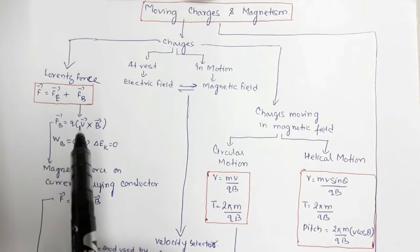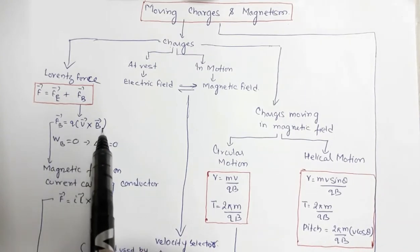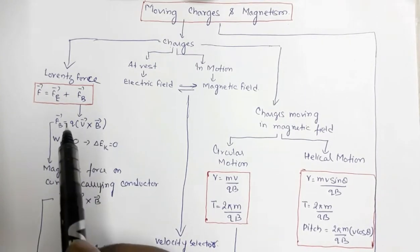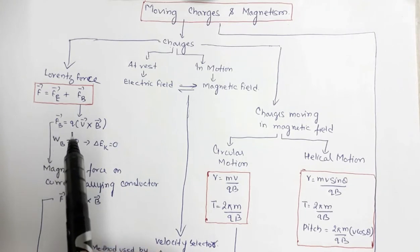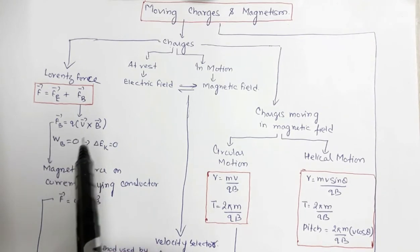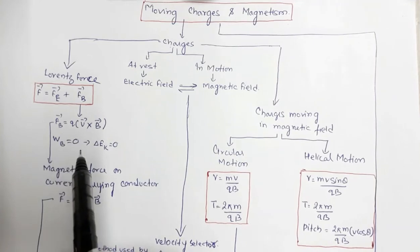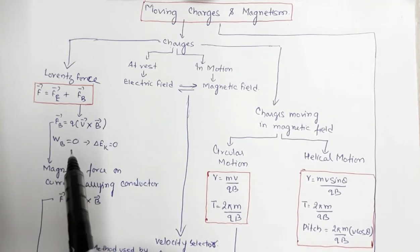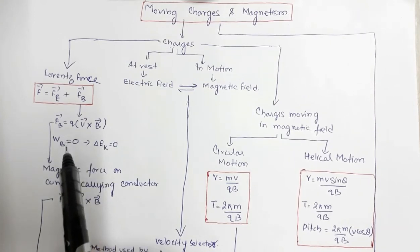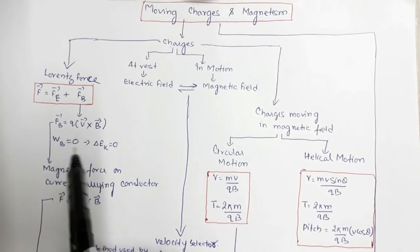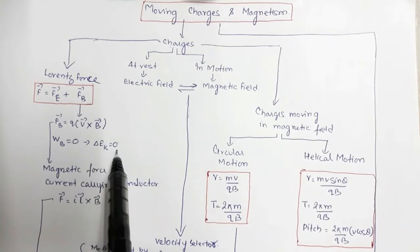The magnetic Lorentz force is perpendicular to the plane containing V and B, which means it is also perpendicular to the direction of displacement. Hence, the work done by the magnetic Lorentz force is zero. From the work-energy theorem, since work done is zero, the change in kinetic energy of the charged particle will also be zero.